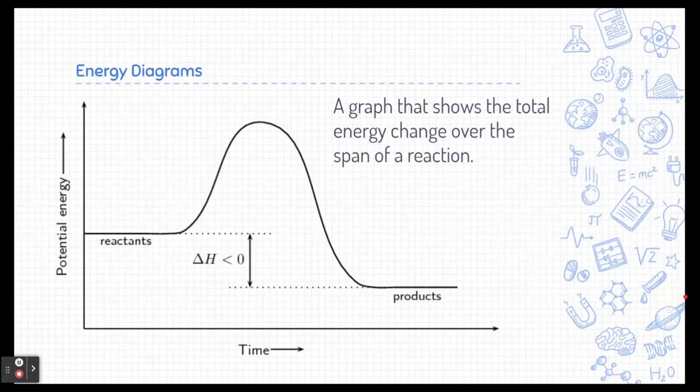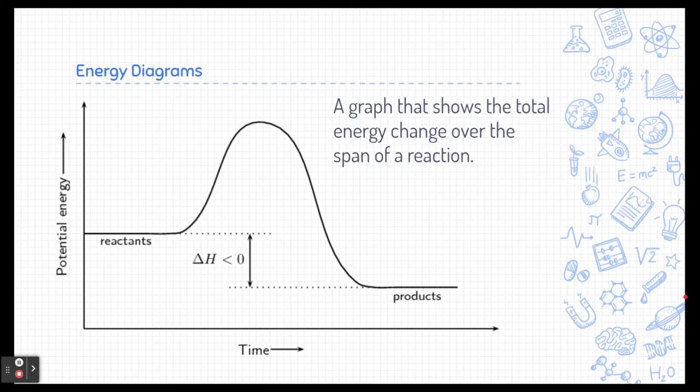This is an energy diagram. It's a graph that shows the total energy change over the span of a reaction. Here you can see on the left side the y-axis is the potential energy and on the bottom the x-axis is the reaction span over time.